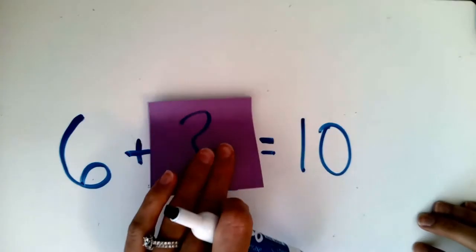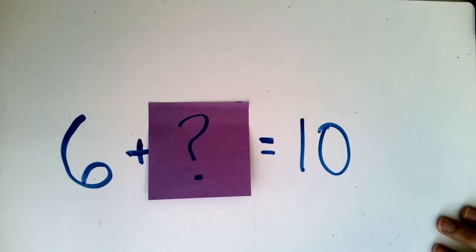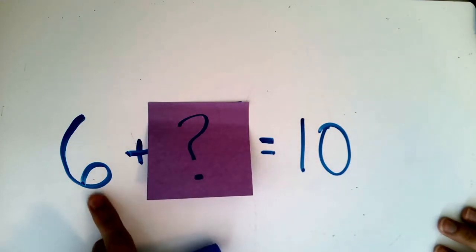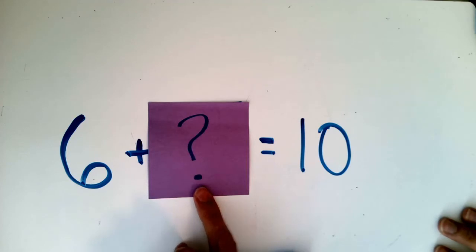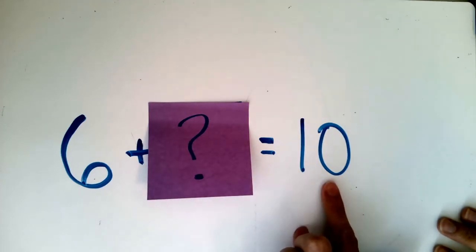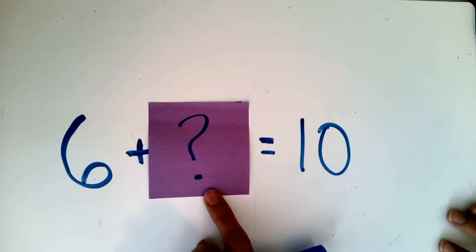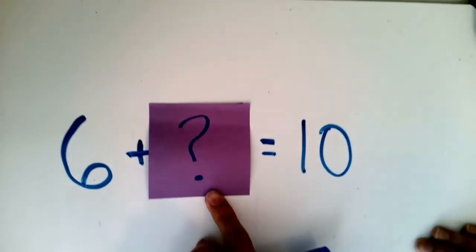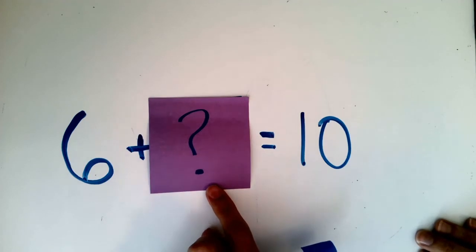Remember this big question mark in this box that I drew, this is our missing part. We have a problem with an unknown part. Zoe had six fish. Her brother brought her some more fish. And now she has 10 all together. So how many did her brother bring? Can you draw a picture to figure out how many more fish her brother brought her? How can we figure this out? We could draw a picture like we did in our last problem. We could use our fingers to count on.